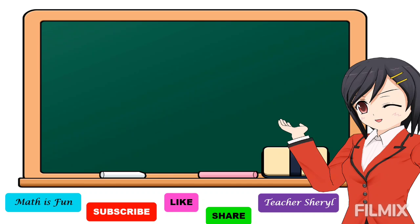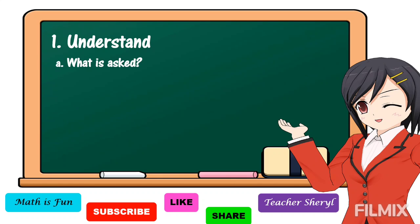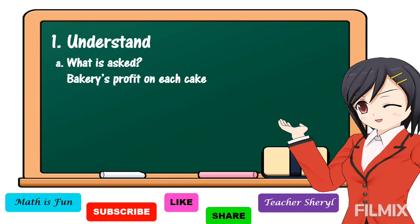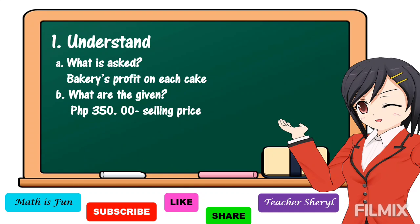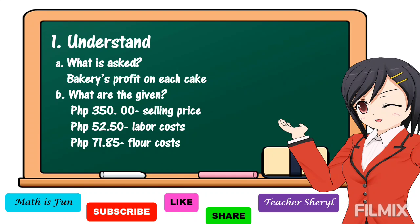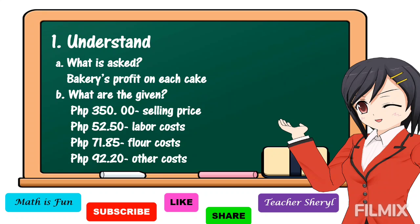To answer our problem, we're going to understand it first. It is asking for the bakery's profit on each cake. The given facts are: 350 pesos — the selling price; 52 pesos and 50 centavos — the labor costs; 71 pesos and 85 centavos — flour costs; and 92 pesos and 20 centavos — other costs.